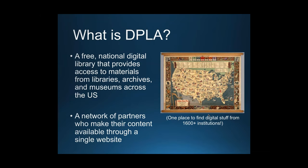The DPLA works with a group of 1,600 partners from across the United States. It is a network of partners who make their content available through a single website — very differently from an organization like the Library of Congress, which is a brick-and-mortar place. The DPLA is instead a network of people who make digitized content available in one place, as well as through their own websites. My favorite simple definition: one place to find digital stuff from 1,600-plus institutions.